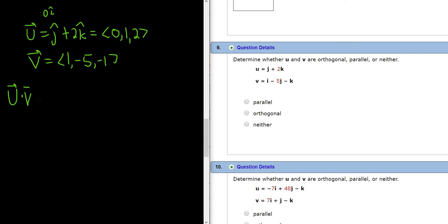So u dot v. So you just multiply the corresponding components and add. So 0 times 1 plus 1 times negative 5 plus 2 times negative 1. I did that kind of quick. Let me just double check my work. So 0 times 1, 1 times negative 5, 2 times negative 1. Yep, everything looks okay.